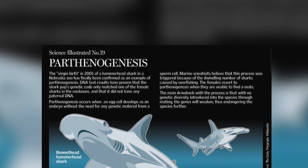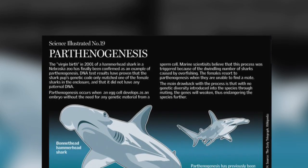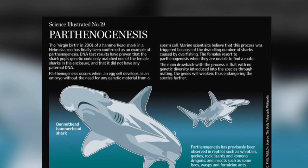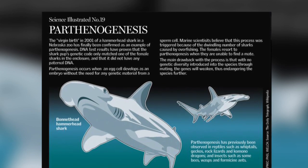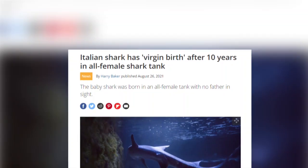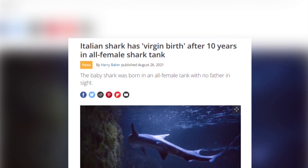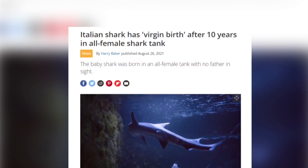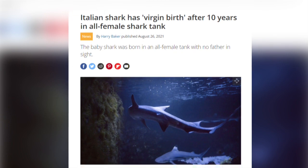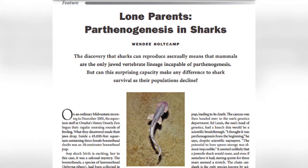I find the reproduction of sharks fascinating, and it includes the ability to reproduce asexually by a process called parthenogenesis. This usually occurs in animals that are less well developed than sharks, but a smooth hound shark, kept in an aquarium for 10 years with another female, produced a female baby. It has also been observed in other sharks such as the white spotted bamboo shark, blacktip sharks, and bonnet head sharks.